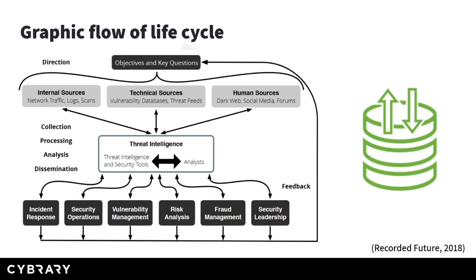In the middle part of the graph, we have the actual cyberthreat intelligence manpower — where all the magic takes place. The processes of collection, processing, analysis, and dissemination are handled by the CTI unit through its security tools and analysts. The output of this phase goes directly to each department benefiting from the CTI analysis. After the intelligence has been used, feedback is provided so the CTI unit knows if what they are providing is actually what those units want to receive.